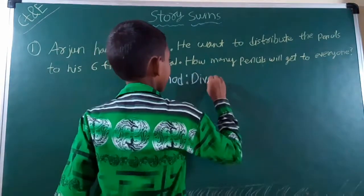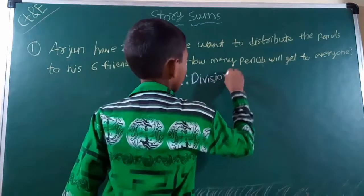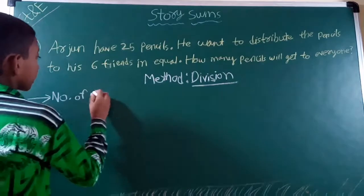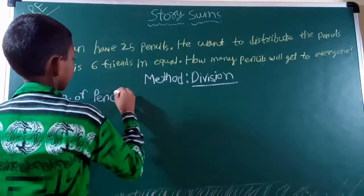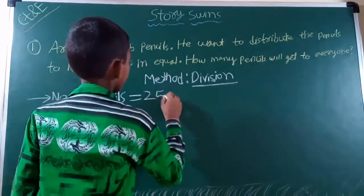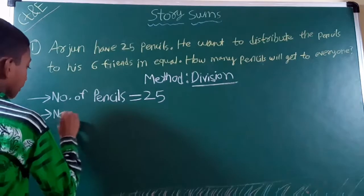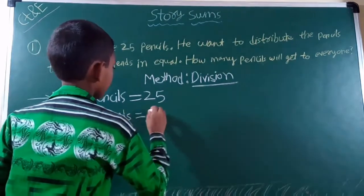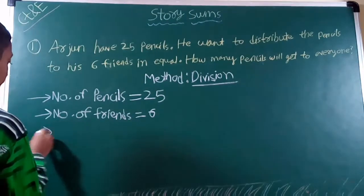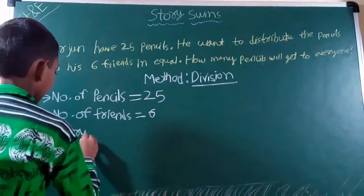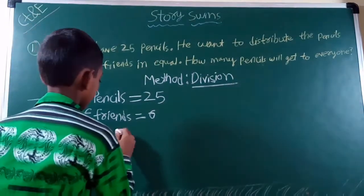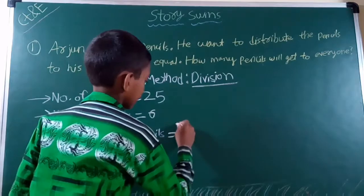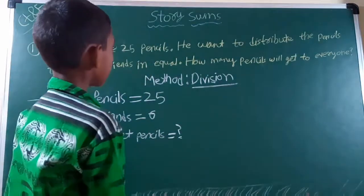Division. Number of pencils is equal to 25. Number of friends is 6. Everyone will get some pencils. Now I will do the division.